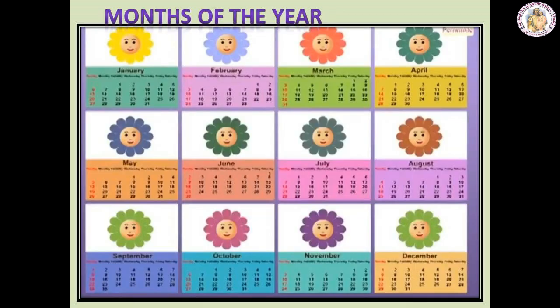Now we will see the months of the year. They are January, February, March, April, May, June, July, August, September, October, November and December. There are 12 months in a year.